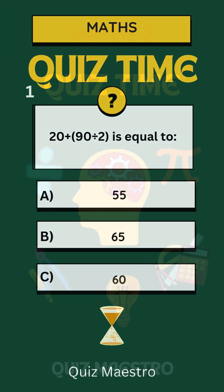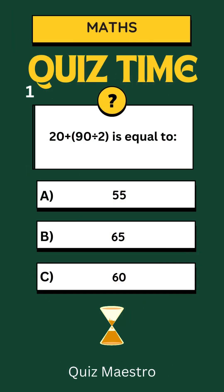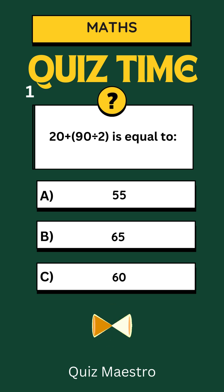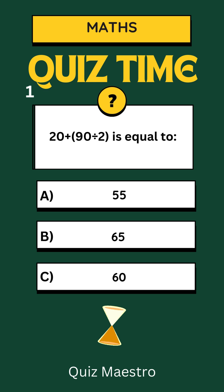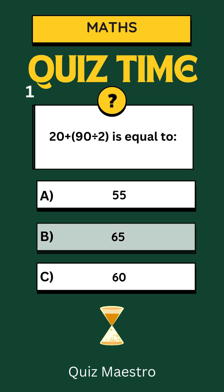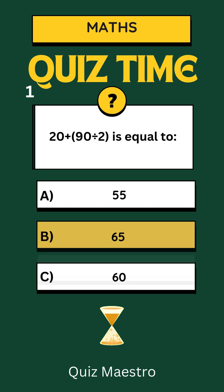Question 1: 20 plus 90 divided by 2 is equal to — is it a) 55, b) 65, or c) 60? The answer is b) 65.